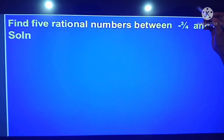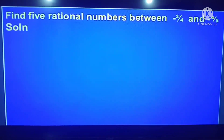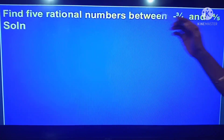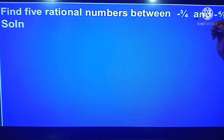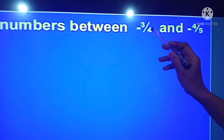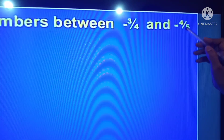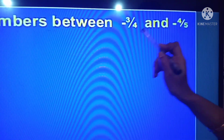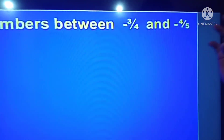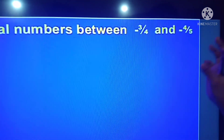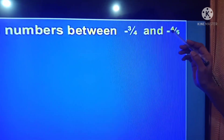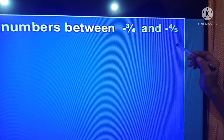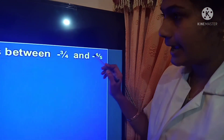Next problem: find 5 rational numbers between minus 3 by 4 and minus 4 by 5. We need 5 rational numbers between these two values. Here the denominators are different — 4 and 5. We need to make the denominators the same by finding the LCM of 4 and 5. Since there are no common factors, the LCM is 4 into 5, which equals 20.